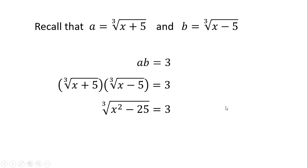Now, let's cube both sides of the equation to eliminate the radical. So we have the equation x squared minus 25 equals 27. And finally, the value of x squared is just equal to 52.